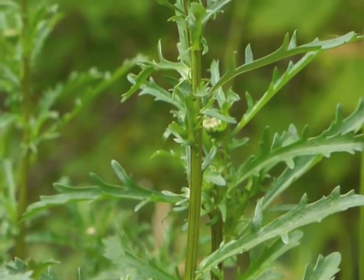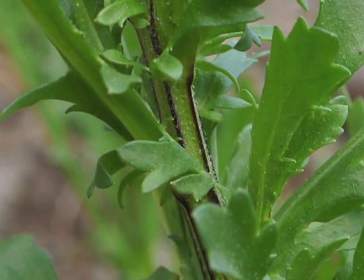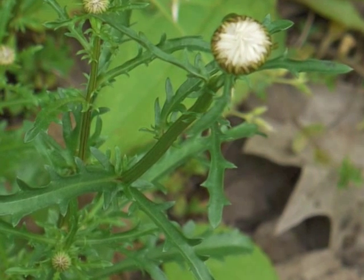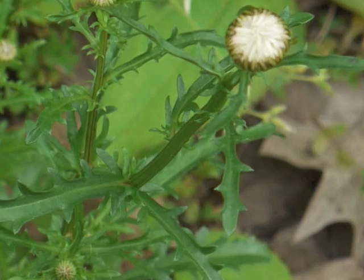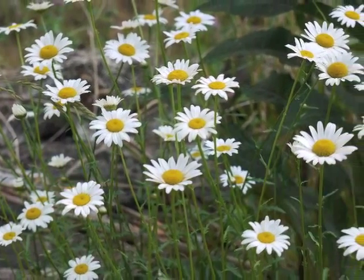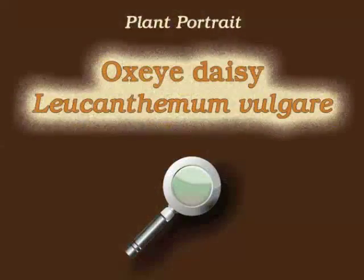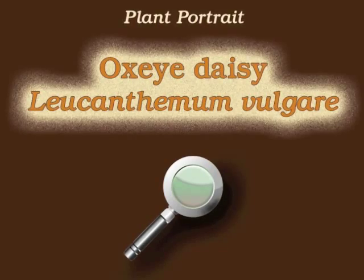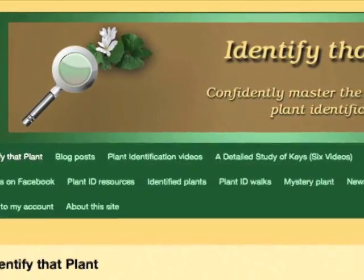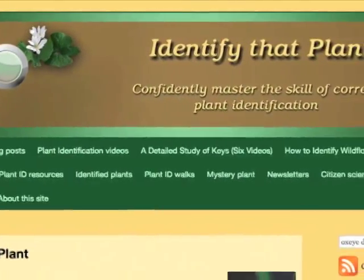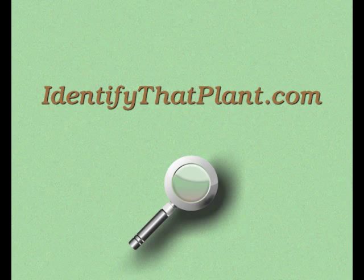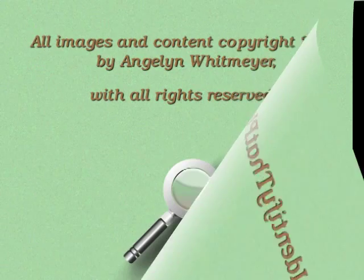The stalk has angles with dark purple highlighting the ridges. As it grows taller and stronger to support the flower head, the stalk's dark purple fades from the ridges until it looks like a stiff green leafless stalk with a single flower head. This is Angeline — thank you for watching and learning about Leucanthemum vulgare, also known as oxeye daisy. Visit identifythatplant.com for more images of oxeye daisy, for plant identification resources, and for information about how you can confidently master the skill of correct plant identification.